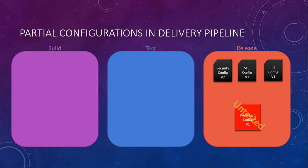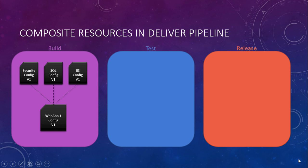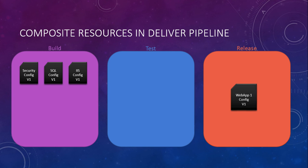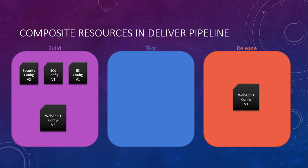In some cases - if you're the security admin with a security issue - you don't care if you break web app one. But in other situations that's undesirable. That's where composite resources shine. With composite resources in the same scenario, when the security admin makes a change to the security composite resource, nothing happens to the web app because composite resources get pulled together at compile time. When the web app owner is ready to release a new version, they reuse the new versions of those composite resources, go through their own test and release process, and everything stays controlled.